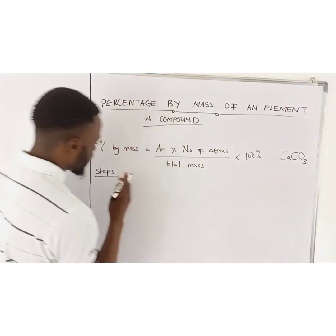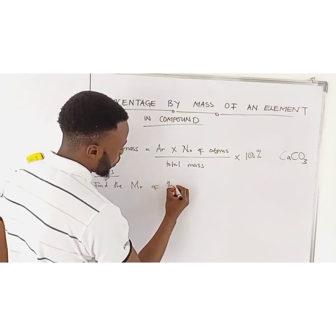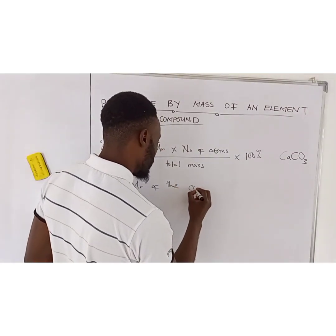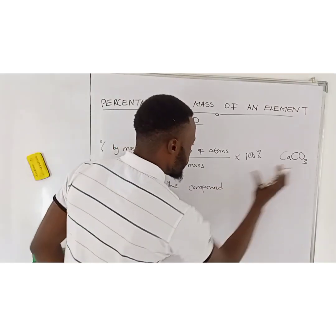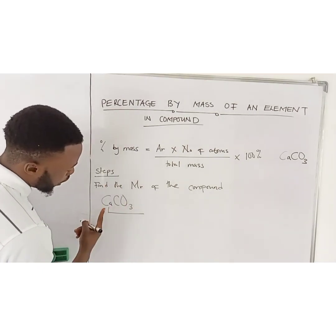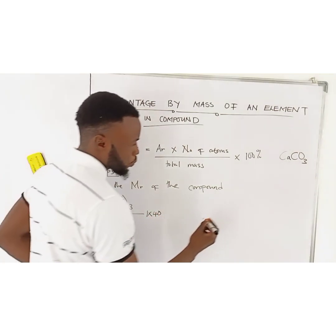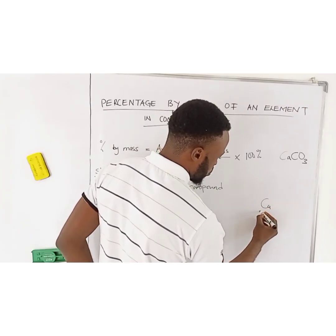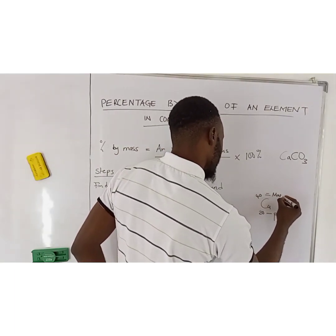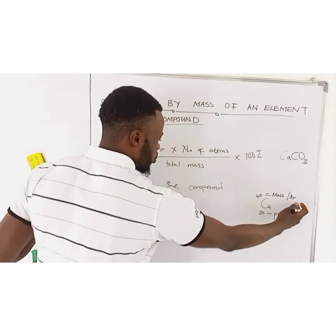Find the MR of the compound. MR represents the relative molecular mass. What compound have you been given? You have been given calcium carbonate. Find the MR of calcium carbonate. On the periodic table you have calcium: proton number 20, and mass number 40. The mass number is also called the AR, or relative atomic mass.